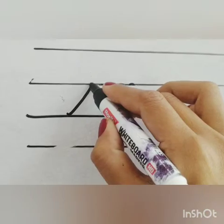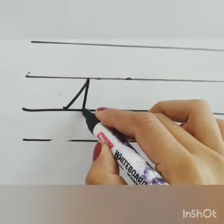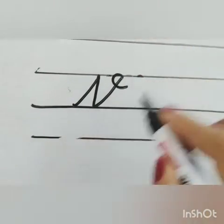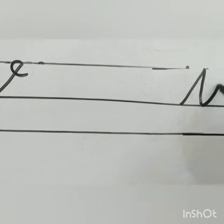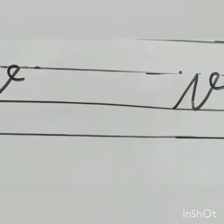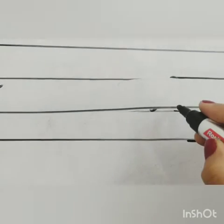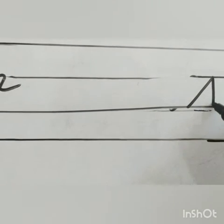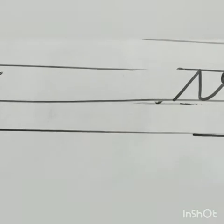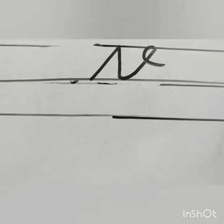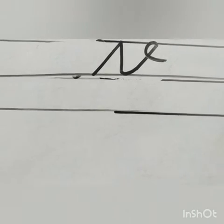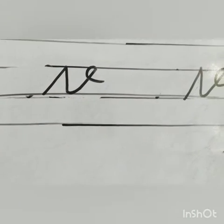First you have to make a slanting line, then a standing line, then again a slanting line and a curve like this. Slanting line, standing line and again a slanting line. Then a tail like this.